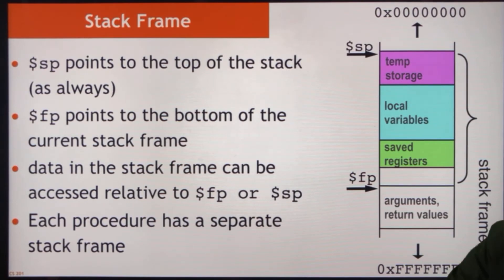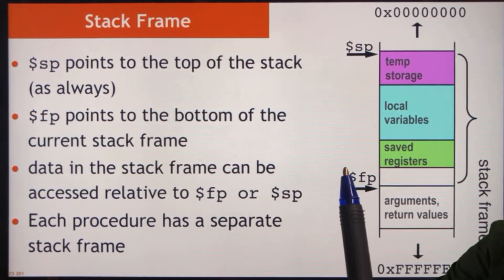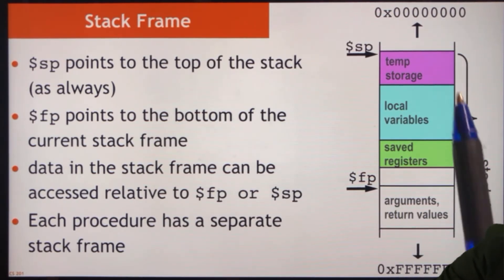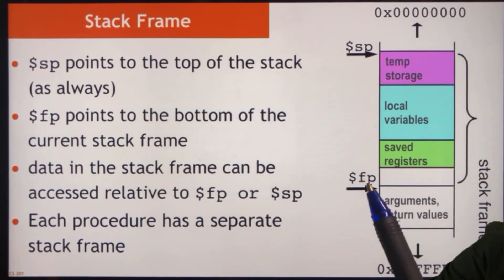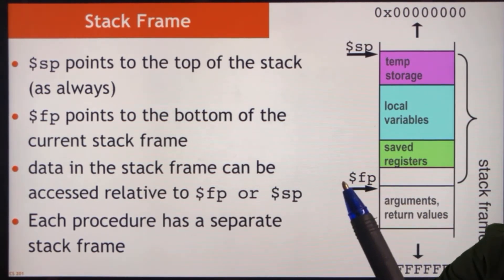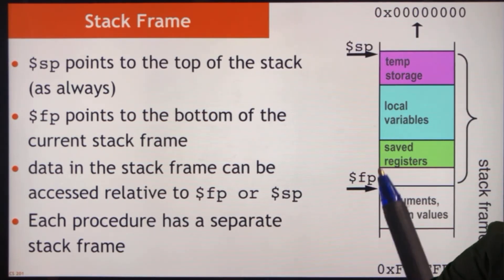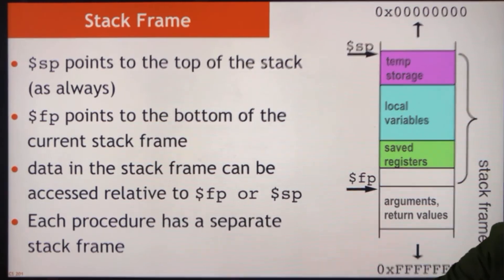The stack pointer always points to the top of the stack. The frame pointer always points to the bottom of the current frame. The data in the stack frame can be accessed either relative to the stack pointer or to the frame pointer — they're both pointing to memory, but because the stack pointer moves, there are advantages to using the frame pointer for consistent static access.